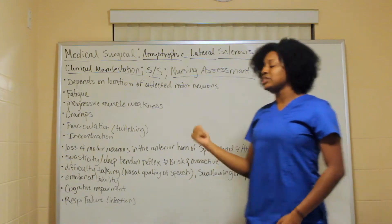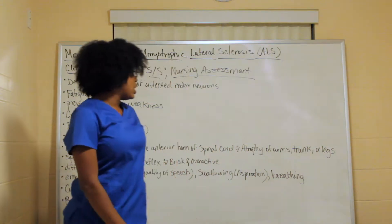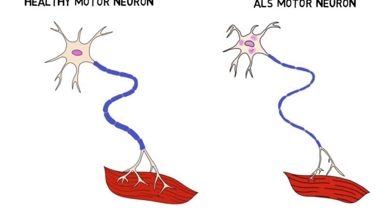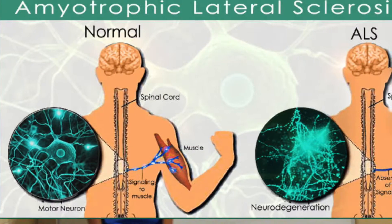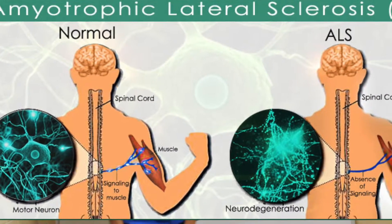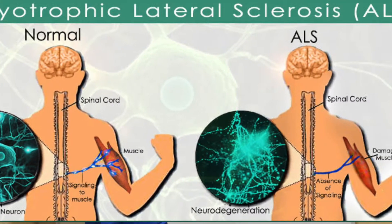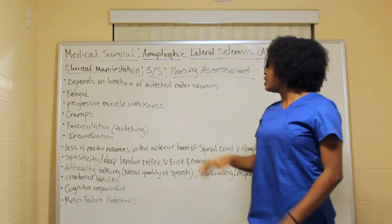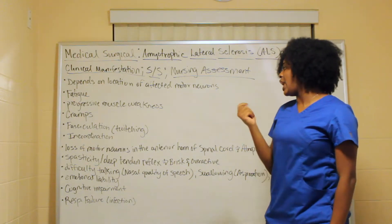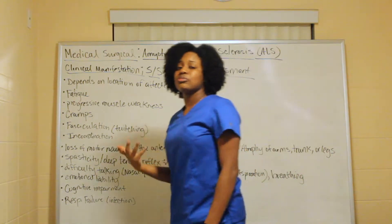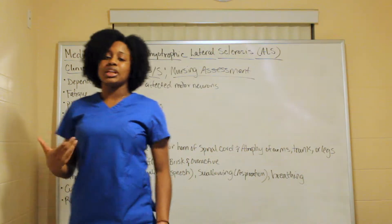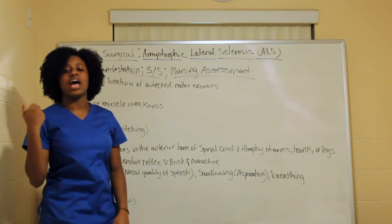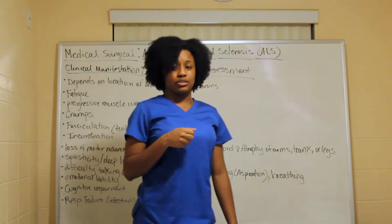Loss of motor neurons in the anterior horn of the spinal cord leads to atrophy of the arms, trunk, and legs — they become smaller in size. Spasticity and deep tendon reflexes are also affected, with reflexes becoming brisk and overactive.